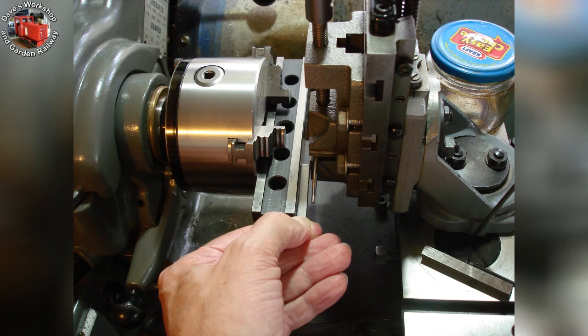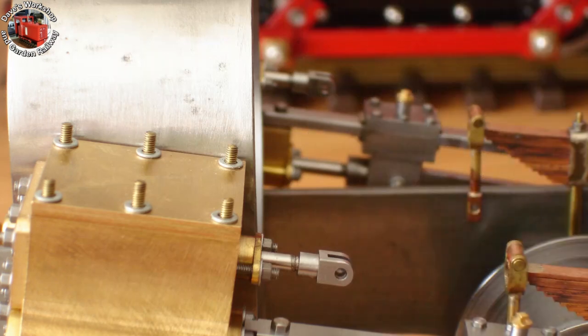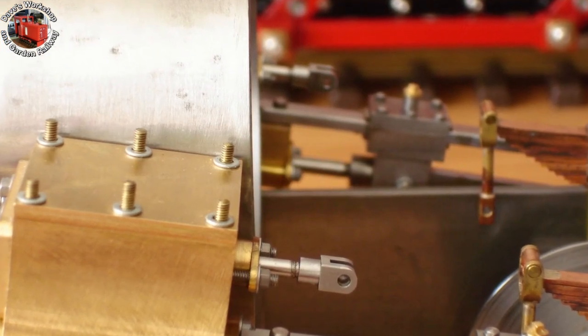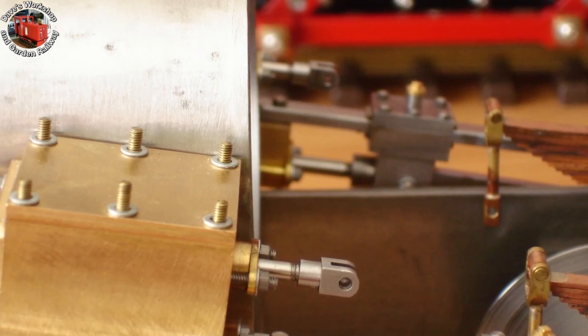This is how I squared the second knuckle for cross drilling. A parallel in the chuck, and a piece of strip steel to align the valve rod. Two finished knuckles. Thanks for watching.